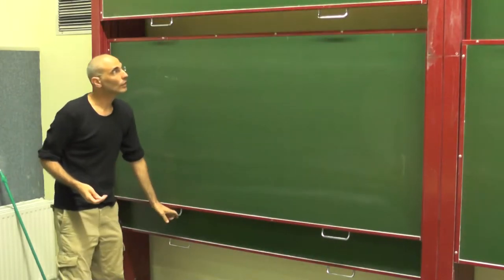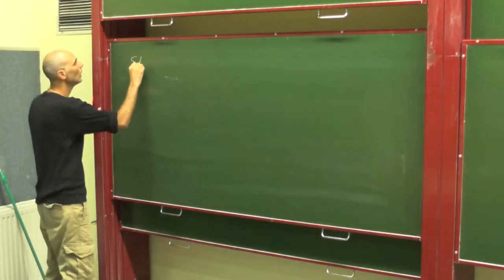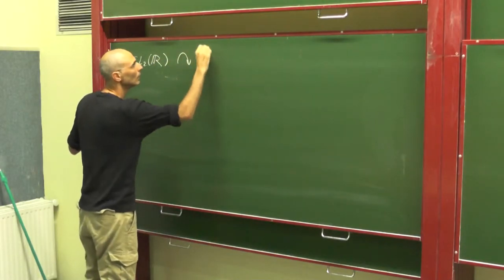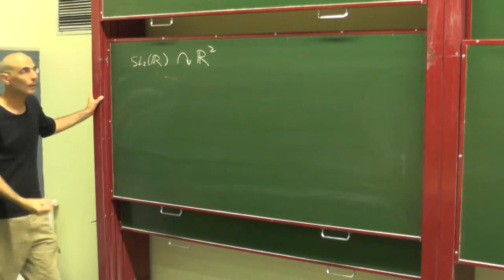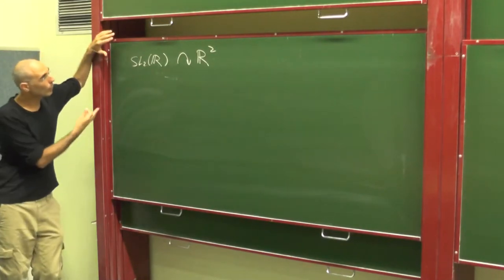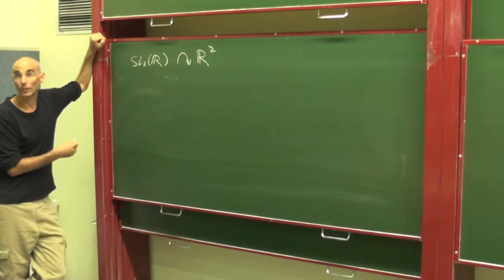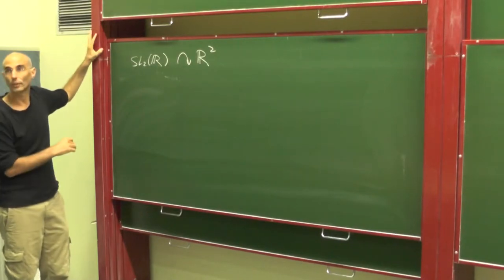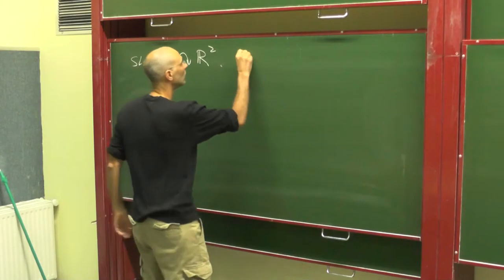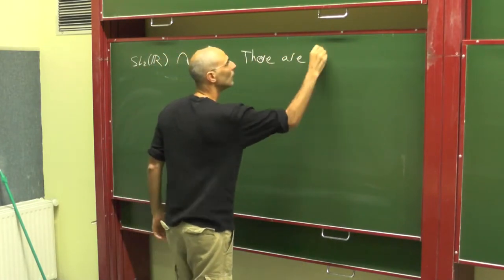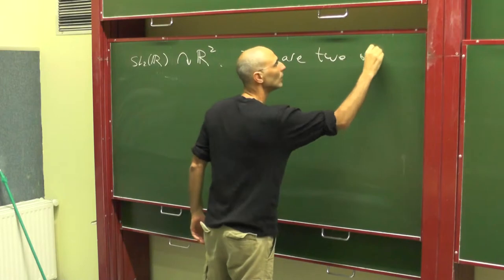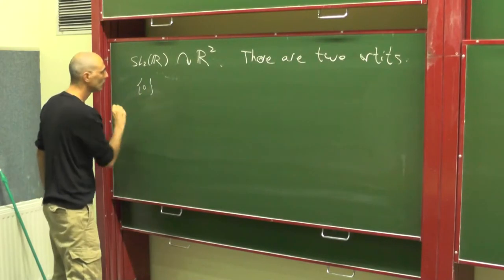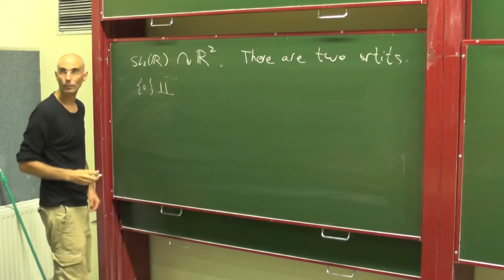So let me start by asking a question. SL2R as well as GL2R acts on the plane R2 by linear transformations. Now we will focus here in this course on dynamics. So somehow the first invariance of an action is the orbit structure of the action. Of course, 0 is a fixed point, and the action is transitive on the rest.